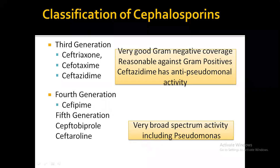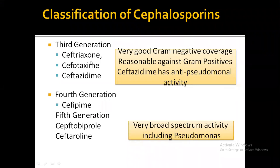The third generation drugs are ceftriaxone, cefotaxime, and ceftazidime. The third generation drugs are the most commonly used cephalosporins — you can take them as the most commonly used antibiotics overall. Ceftriaxone and cefotaxime are used most commonly in community-acquired pneumonia, hospital-acquired infections, and respiratory infections. In all admissions you can see this injection ceftriaxone and cefotaxime.